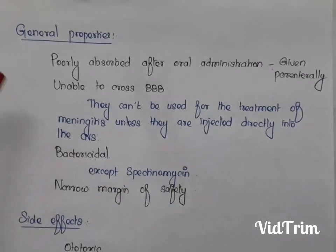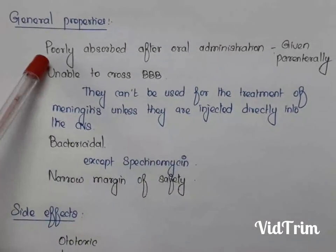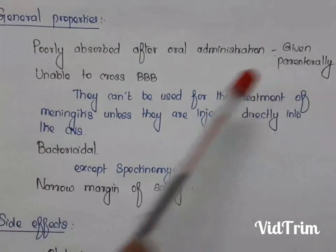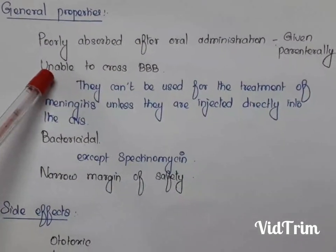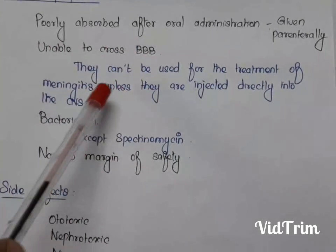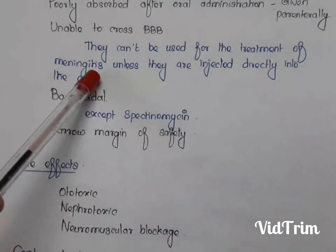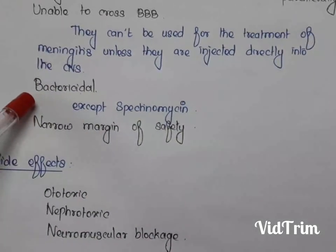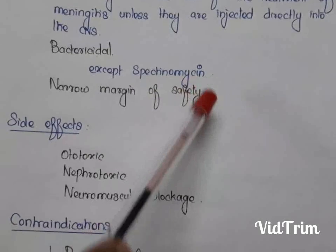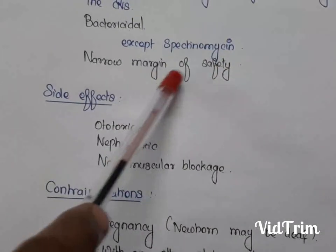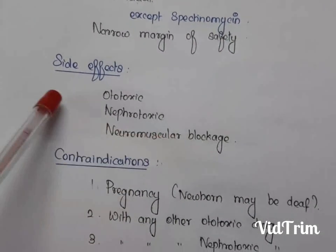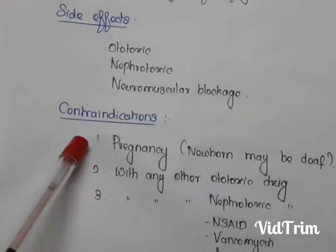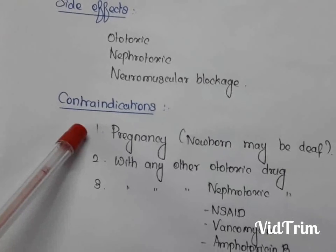The general properties of aminoglycosides are: they are poorly absorbed after oral administration, so they can only be given parenterally. They are unable to cross the blood-brain barrier, so they cannot be used for meningitis unless injected directly into the CNS. They have bactericidal action, except spectinomycin, and they have a narrow margin of safety.